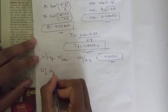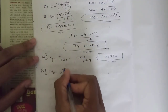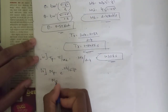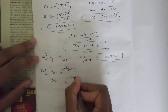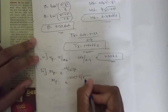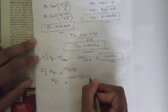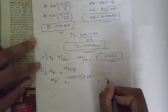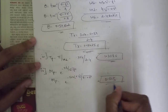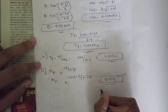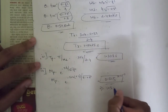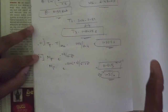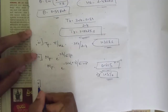For peak overshoot Mp, the formula is e^(−πζ / √(1 − ζ²)). Substituting: Mp = e^(−3.14 × 0.8 / √(1 − 0.8²)). Solving this gives 0.015, or converting to percentage: 1.5%.